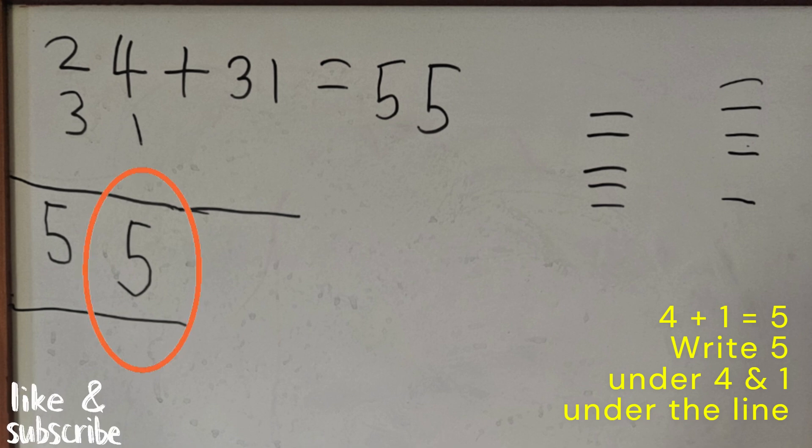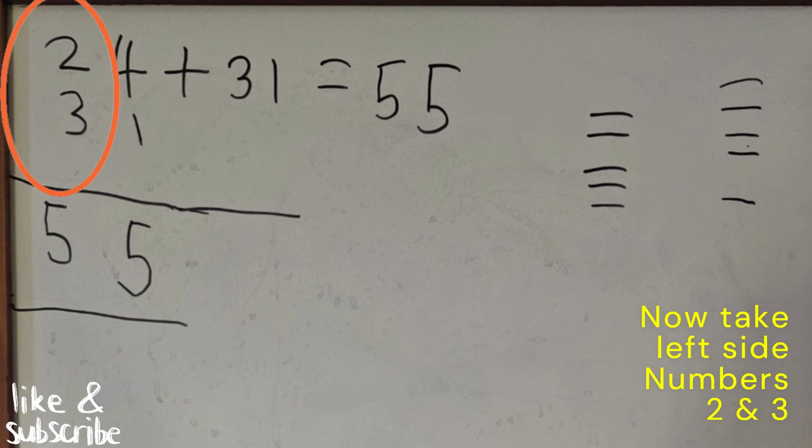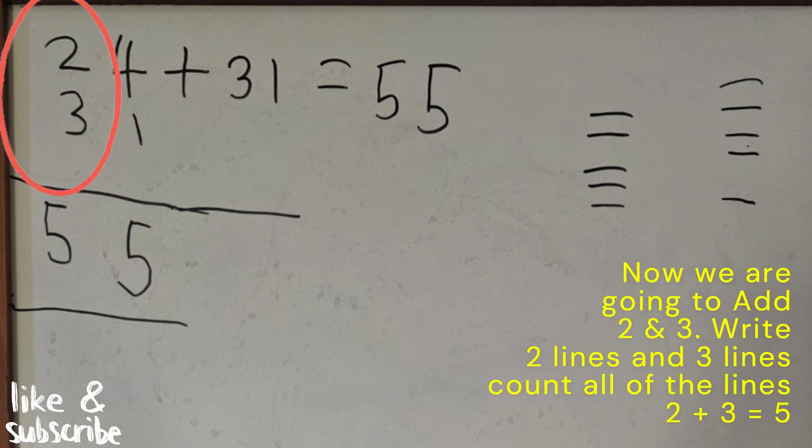Write 5 under 4 and 1 under the line. Now take the left side number, which are 2 and 3. Now we are going to add 2 and 3.